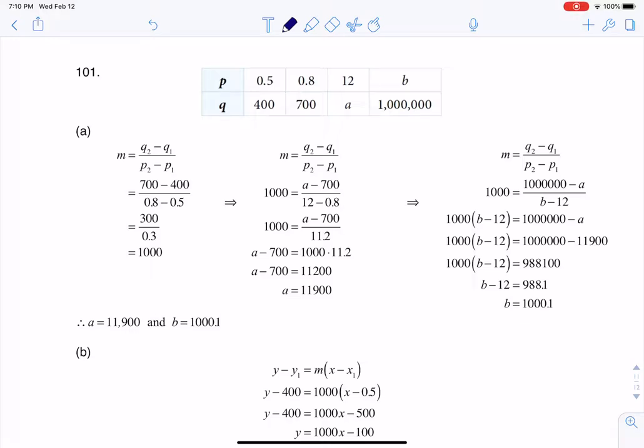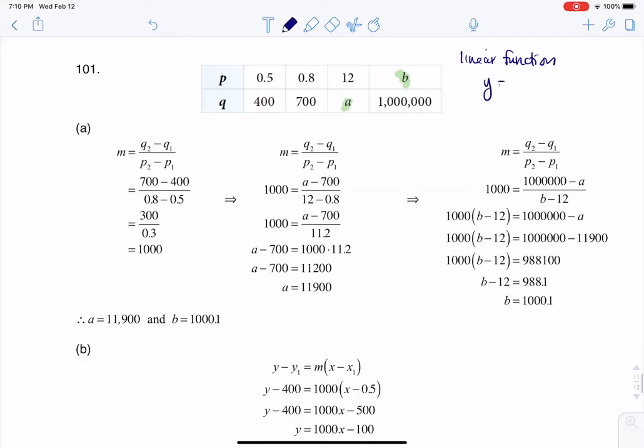Hey Math 31, I had a question coming out of section 4.1, number 101. We were given a table of values for a linear function, and the first thing we need to do is find the missing values a and b. If we have a linear function, that means we're looking at a function of the form y equals mx plus b, and that slope has got to be constant.